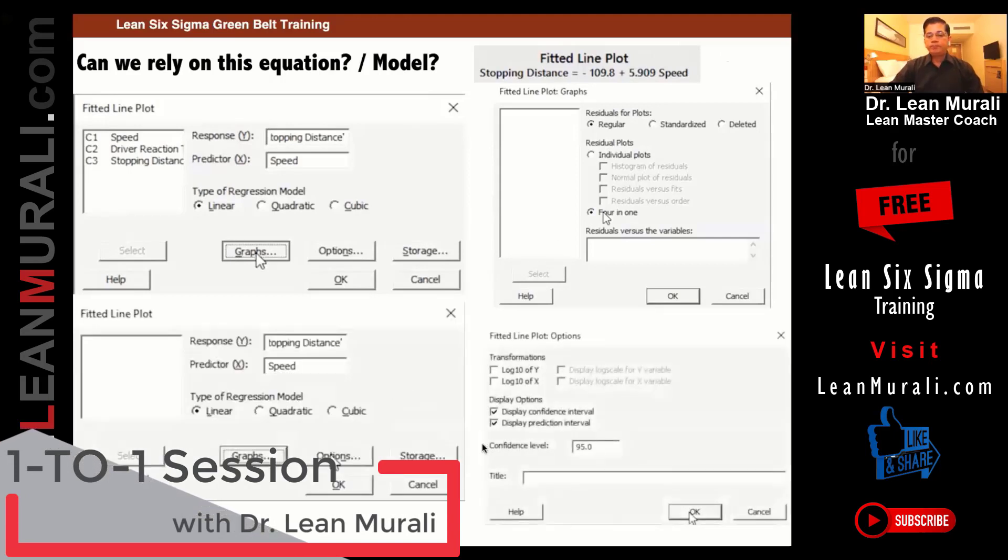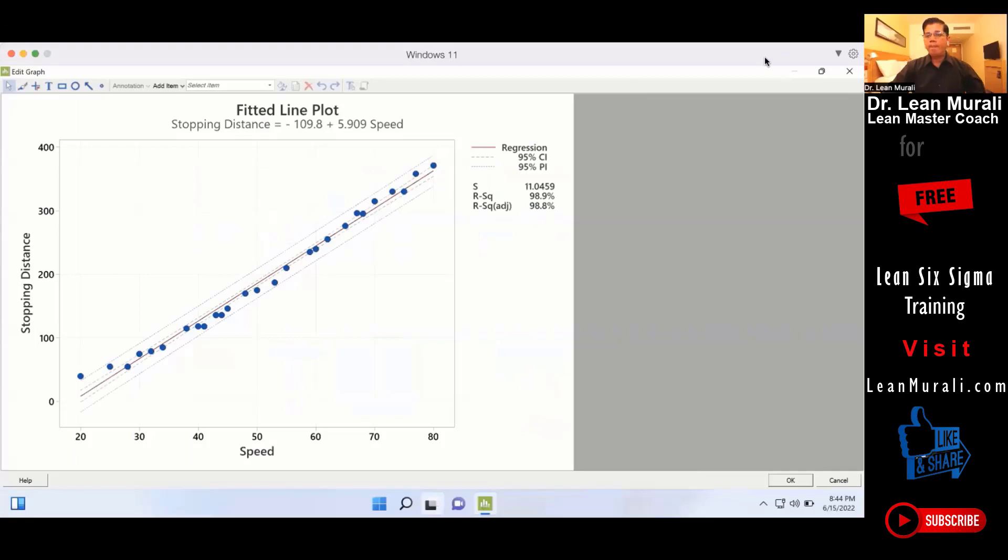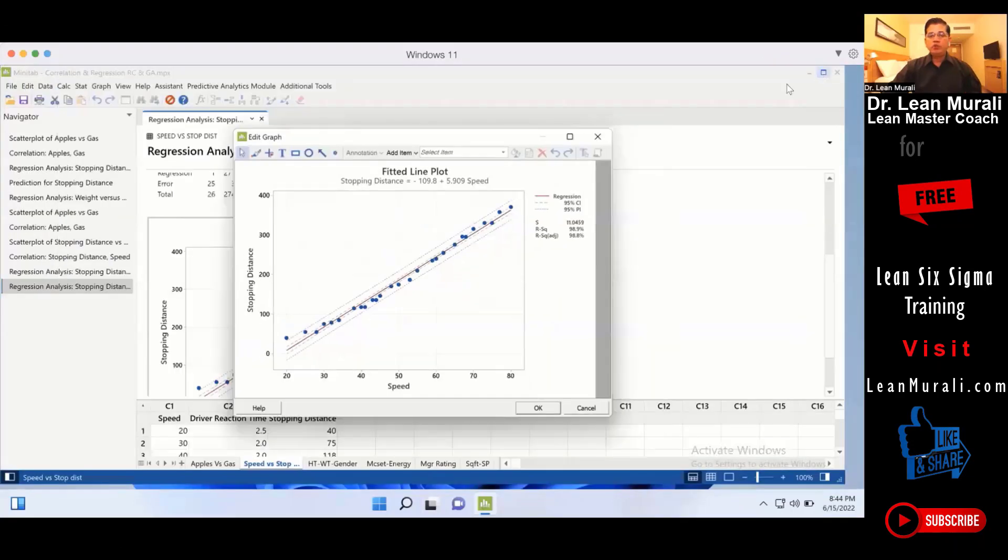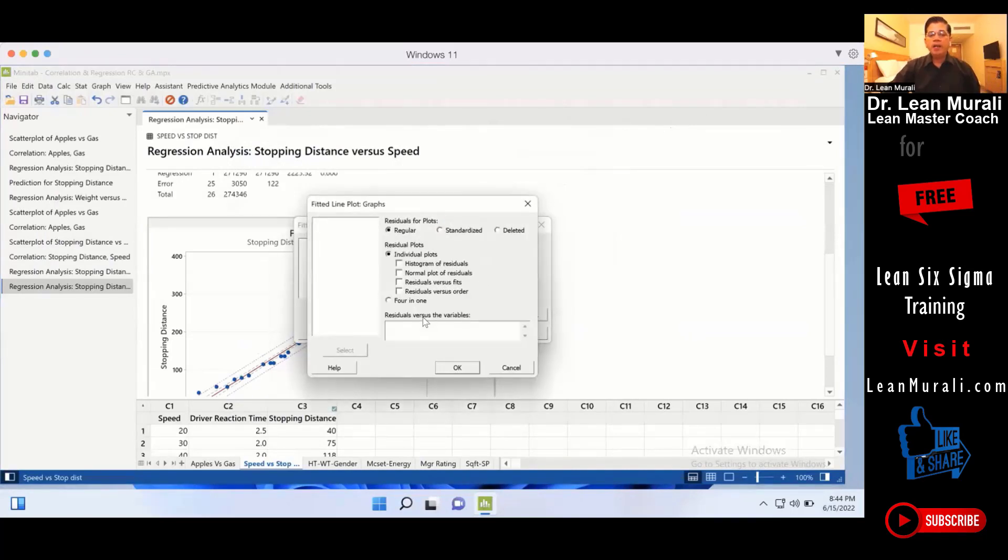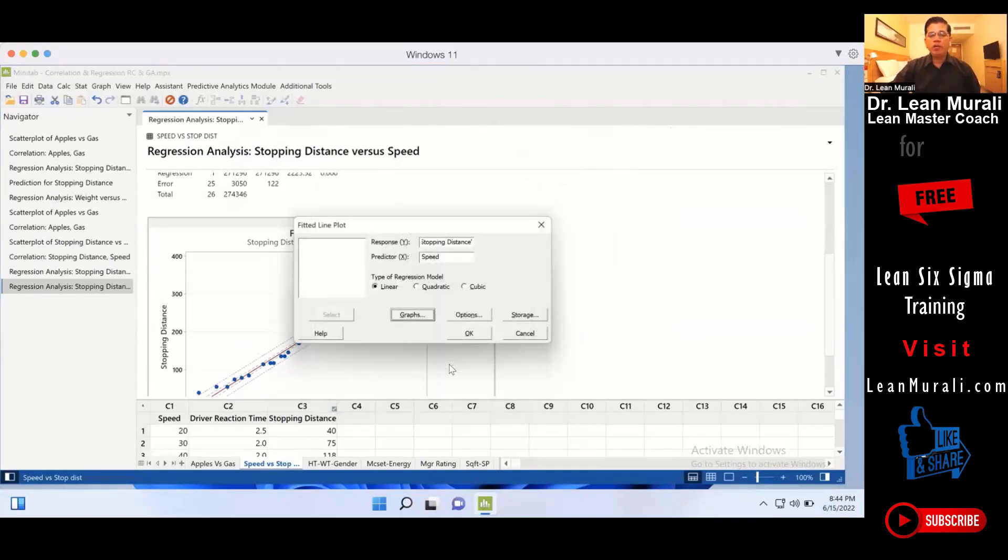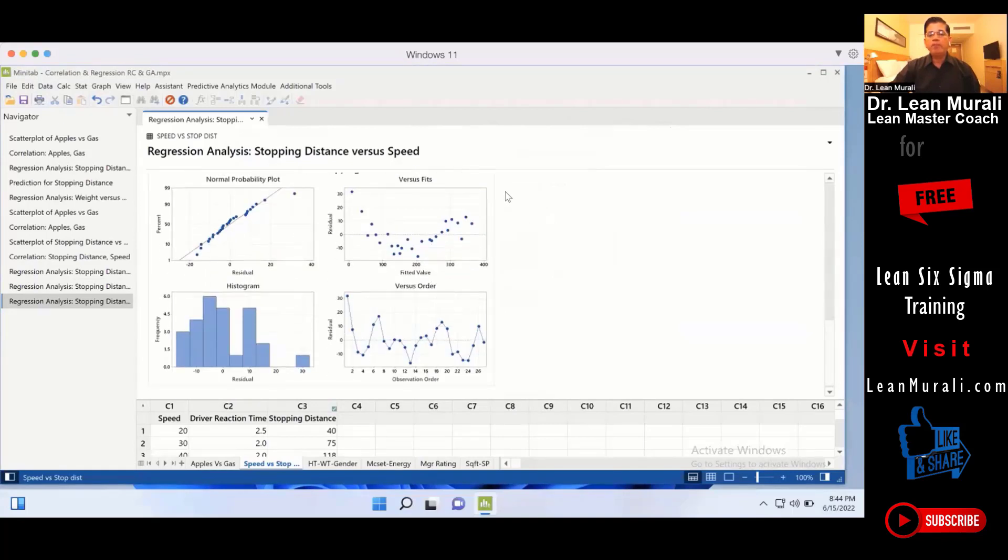So we can make this 4 in 1 plot. You need not remember this. I can just show you in Minitab also. Quickly, I will put Ctrl E. Let me show you in Minitab quickly. Ctrl E. And in graphs, there is something called 4 in 1 plot and say okay. And then if I say okay, you will get a 4 in 1 plot like this.